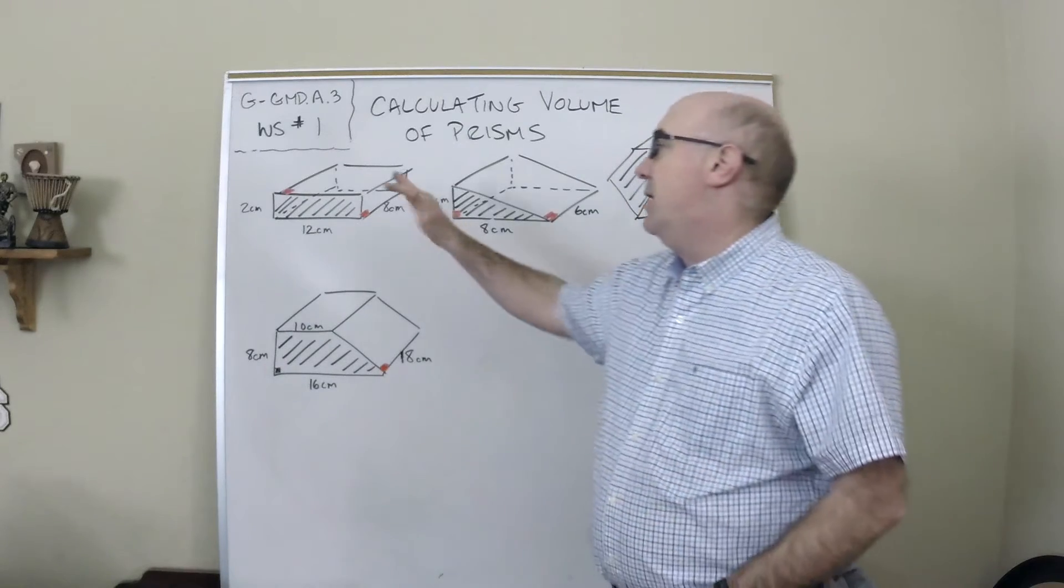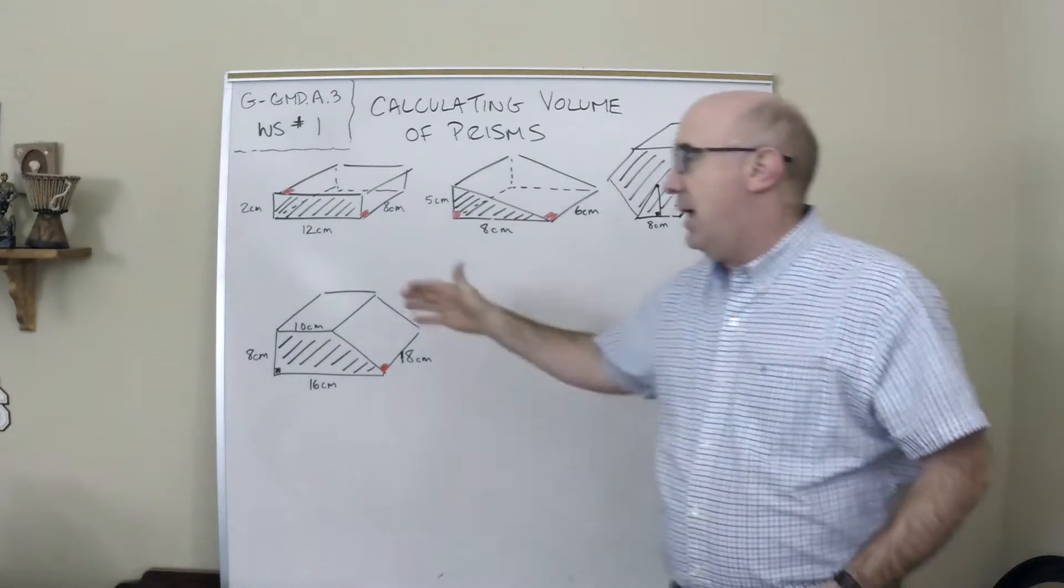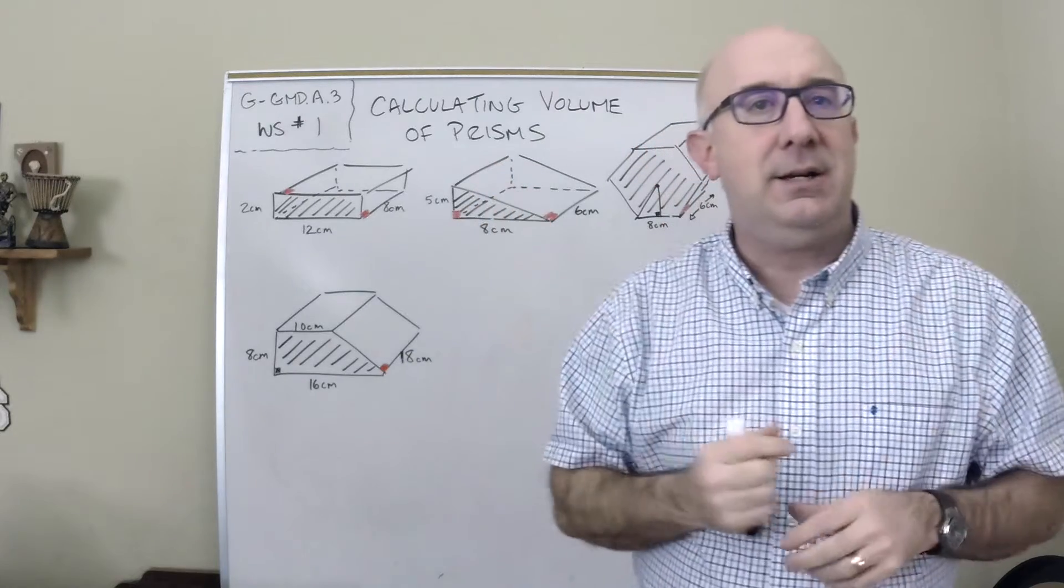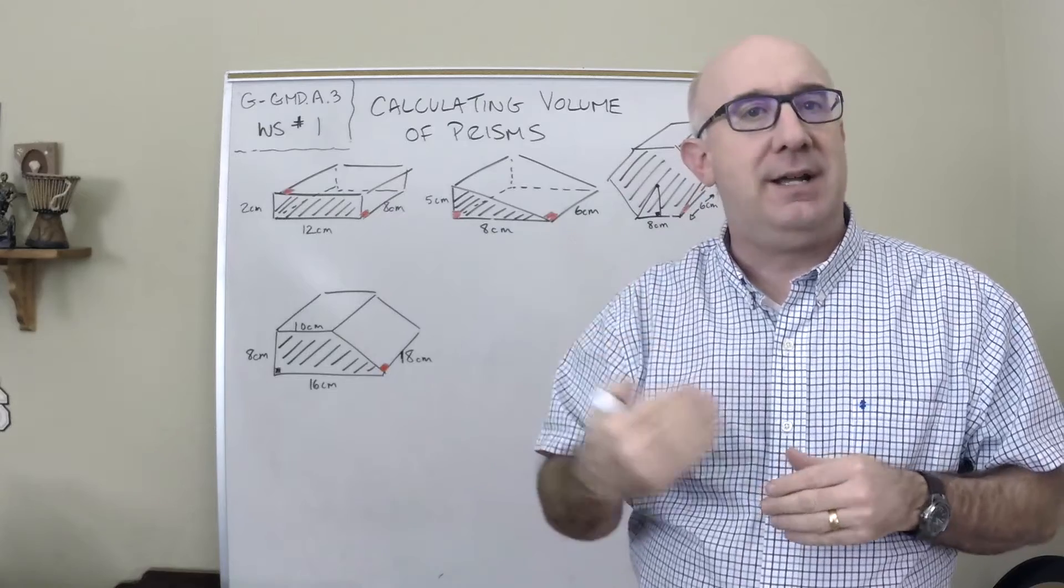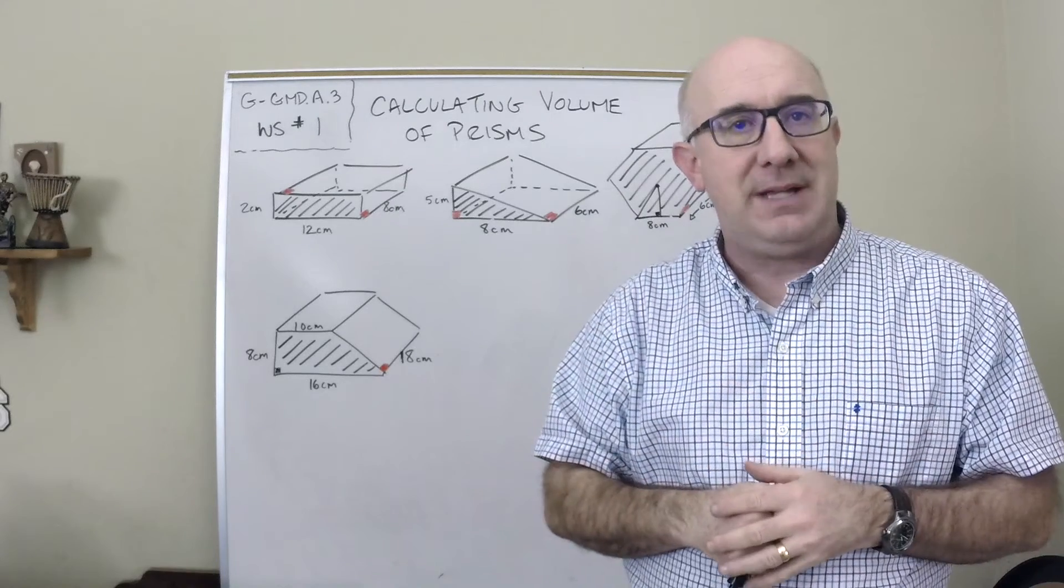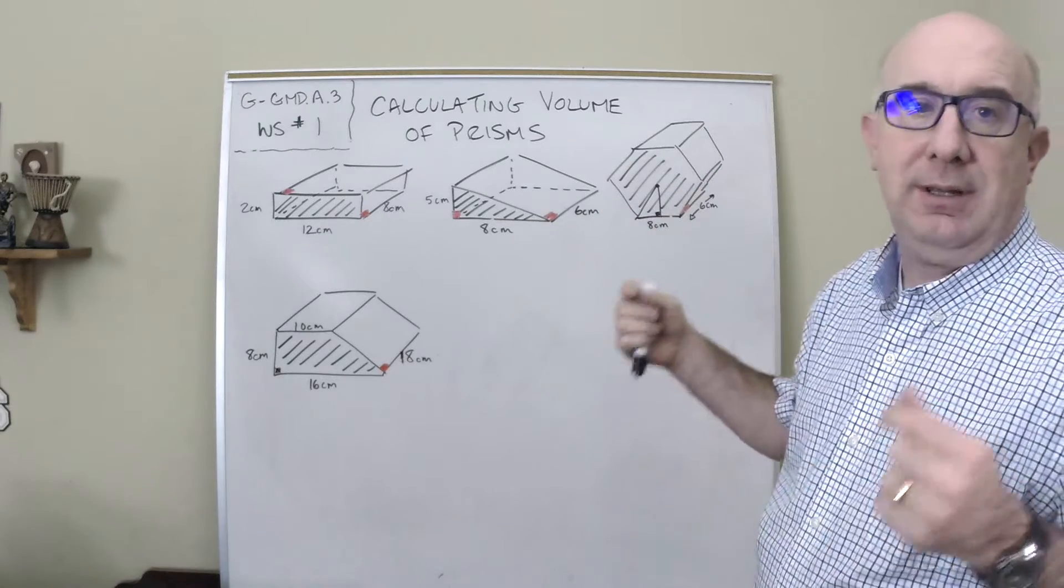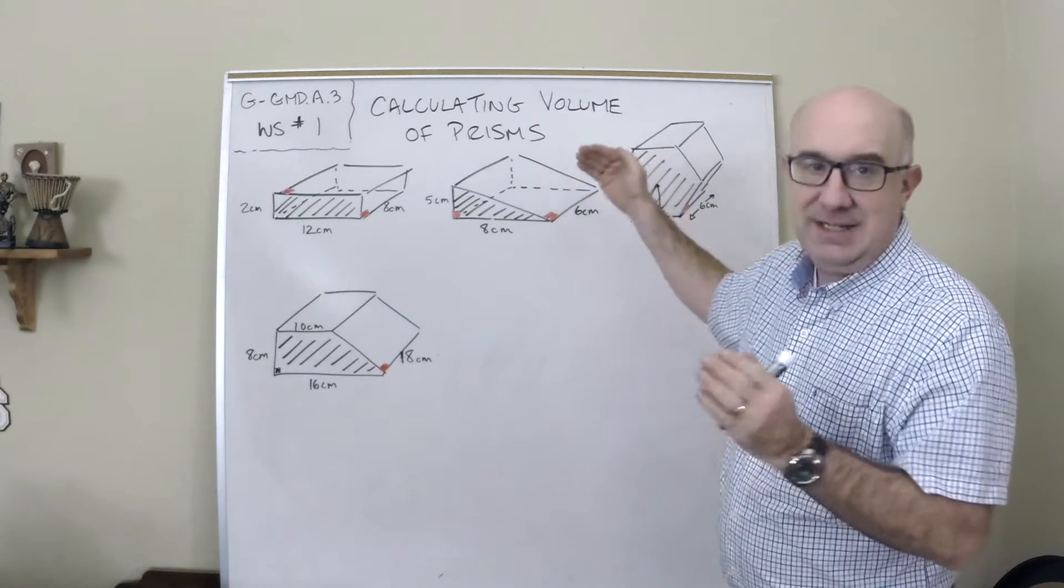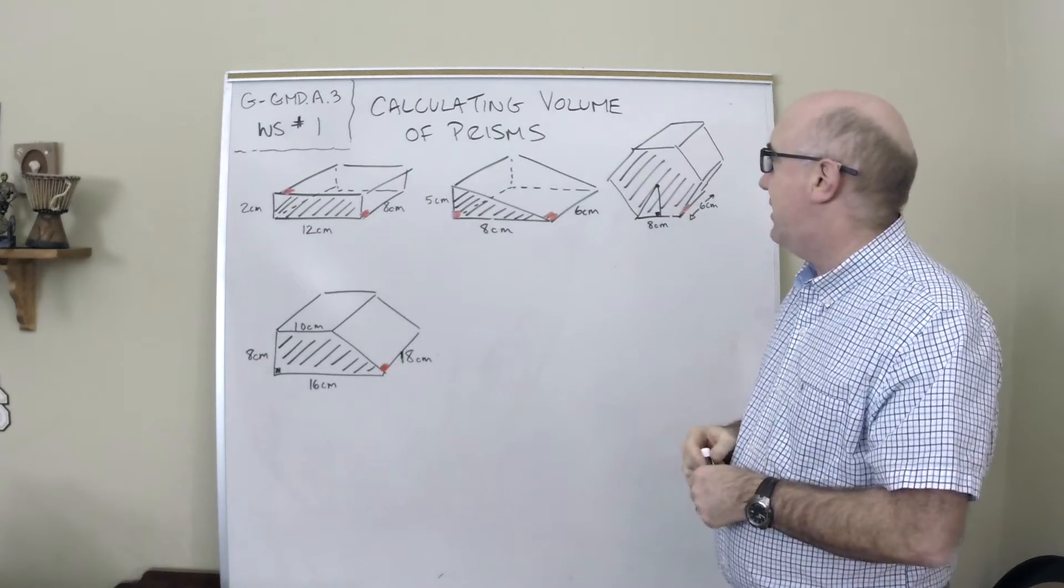These are all different types of prisms. It's a rectangular prism, a triangular prism, a hexagonal prism, and a trapezoidal prism. They're all right prisms, which means the lateral sides are perpendicular to the base. And I've drawn all of these and shaded what I'm calling the base. The base is that they have to be identical, have to be opposite each other in the shape.